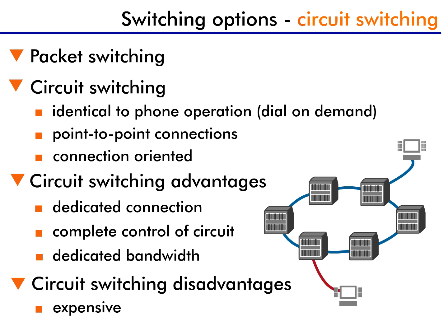Circuit switching, a connection-oriented communication method, forwards connection setup messages across the network from switch to switch. Each switch, in turn, establishes a connection through it. Eventually, the connection setup request reaches the final destination, and now you have an end-to-end circuit-switched connection. The term circuit refers to this single point-to-point connection.